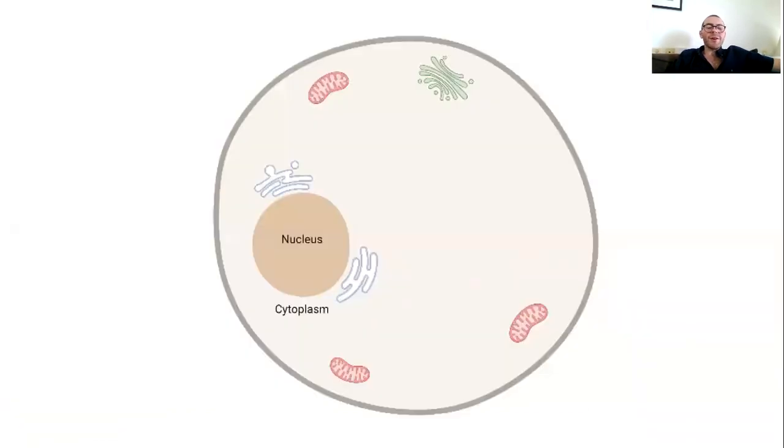Once upon a time, it was thought that the only real structures in the cell are these large membrane-bound organelles, mitochondria, the Golgi, but it turns out the story is much more complicated than that.